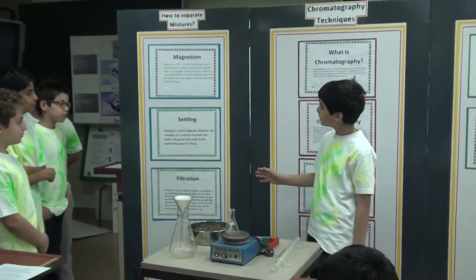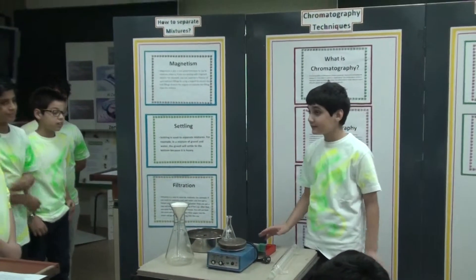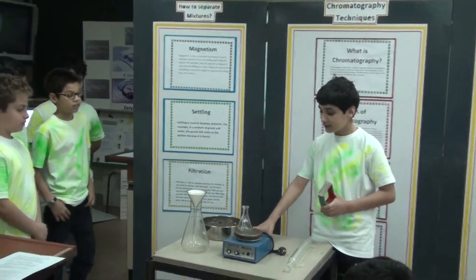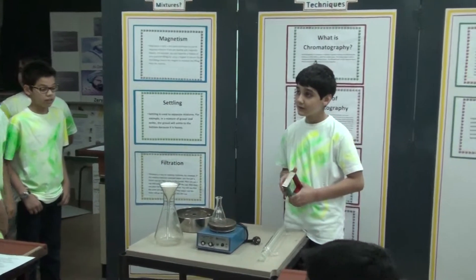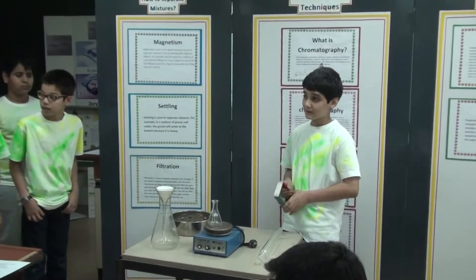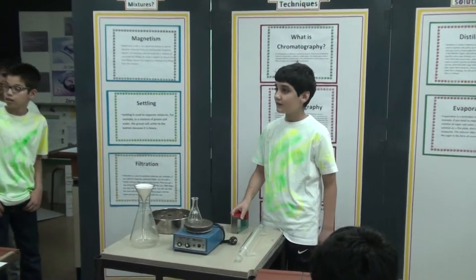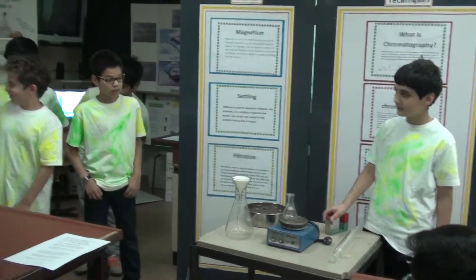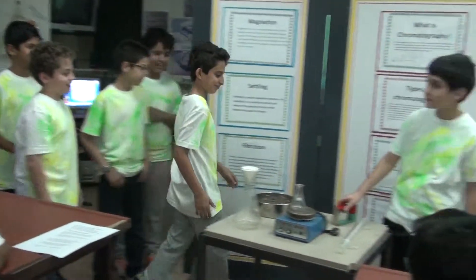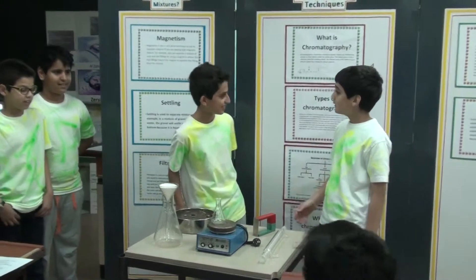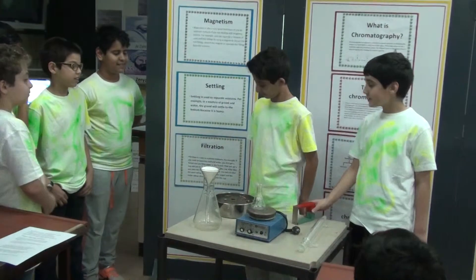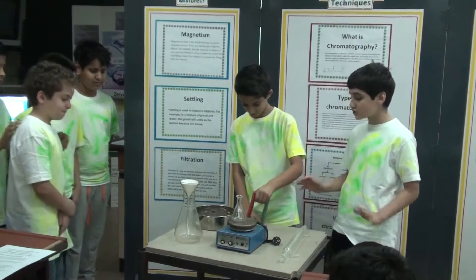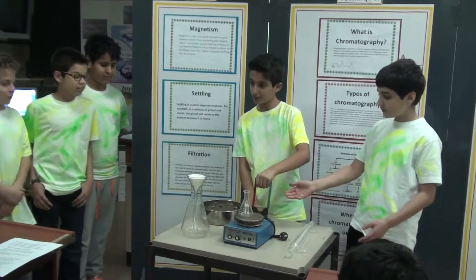We'll first start with the mixtures. We'll talk about magnetism. First we can get the magnet and here are some iron filings. We can separate the iron filings from the mixture, as Nawak is doing right here.